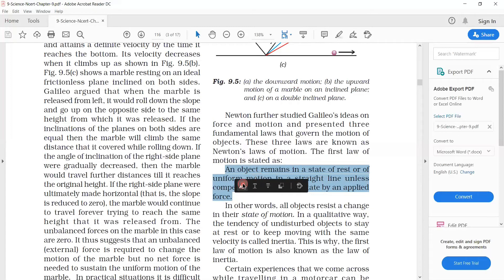So here is the statement of the first law of motion: An object remains in the state of rest or of uniform motion in a straight line, unless compelled to change that state by an applied force. Unless and until we have disturbed that object or compelled it and put an outer force, then the object remains in its state of position.